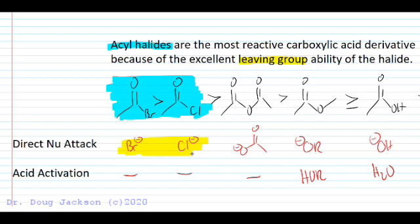For direct nucleophilic attack, you see that leaving group will be bromide and chloride. We don't need acid activation for these. So we won't have a protonated leaving group for these three functional groups: the acid bromides, the acid chlorides, which we're talking about here, and then the anhydrides are also active enough to react without activation. So we'll only see a direct nucleophilic attack for those.